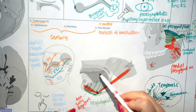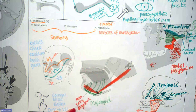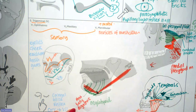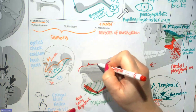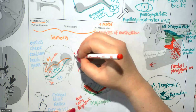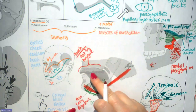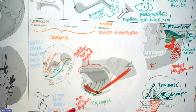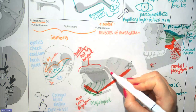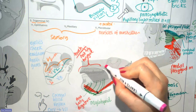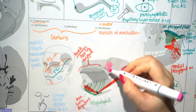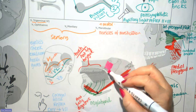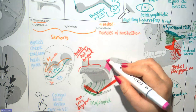The trigeminal nerve also supplies touch sensation to the tongue — not taste, but touch — and only to the anterior two thirds. Looking at the soft palate, there are muscles that help to raise it and muscles that tense it once elevated. This serves an important function in closing off the nasopharynx so that when you're eating food, nothing goes up your nose.